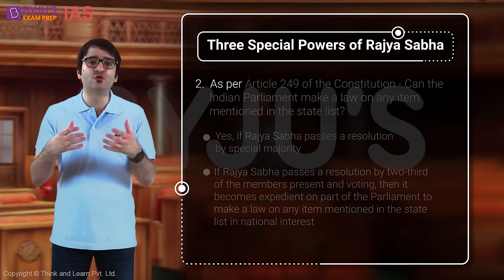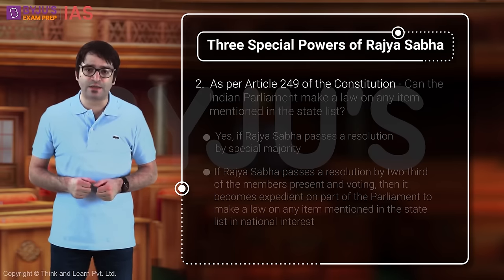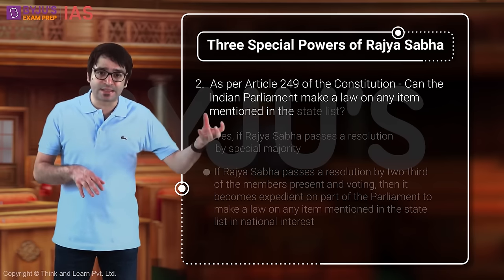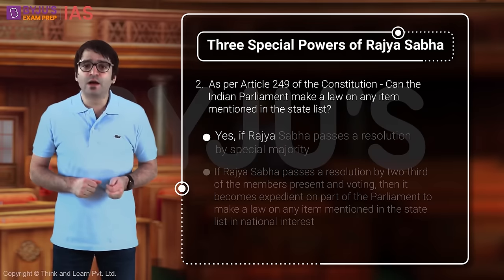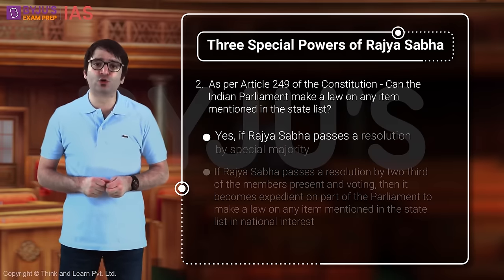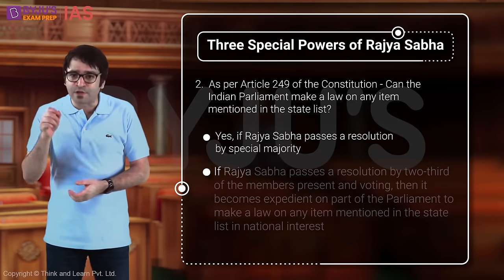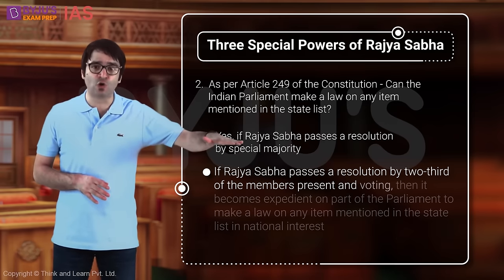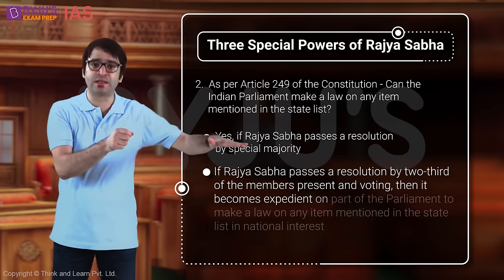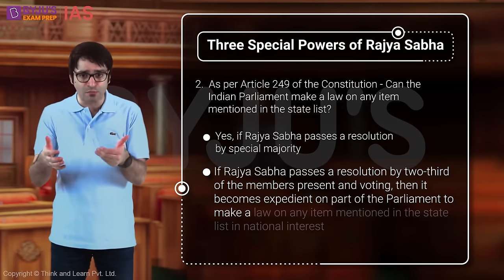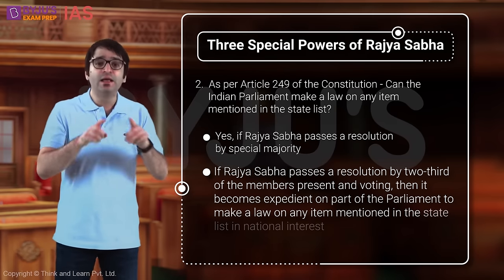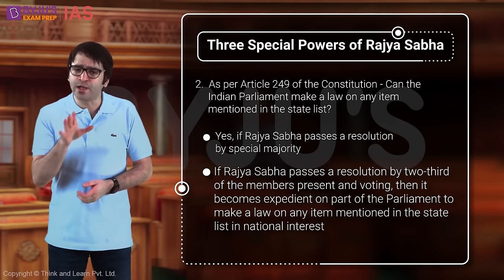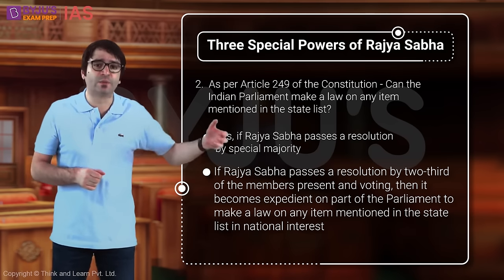Power Number 2: Article 249 of the Constitution. Can Indian Parliament make a law on any item mentioned in the State List? Yes, but only if Rajya Sabha passes a resolution by special majority — specifically two-thirds of the members present and voting. If Rajya Sabha passes such a resolution, it becomes expedient for Parliament to make a law on any item in the State List in national interest. This is an exclusive power vested with Rajya Sabha.